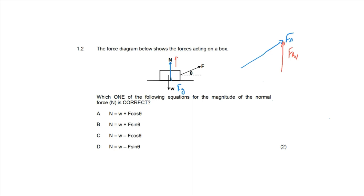We need to calculate the magnitude of the vertical component of the applied force. In the triangle, the applied force is the hypotenuse, so the vertical component equals F_a × sin(θ), because sine gives the opposite side over the hypotenuse. There are now two forces acting upward on the object: the normal force and the vertical component of the applied force.